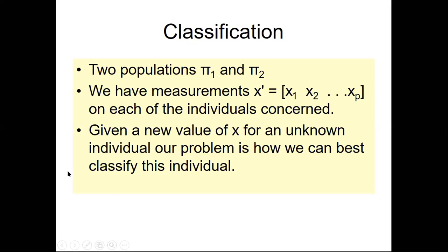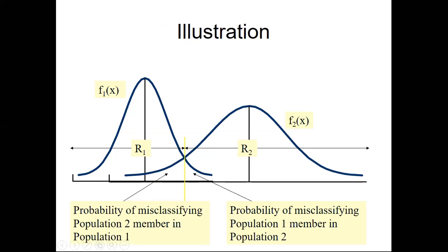You want to classify a new variable for an unknown individual — whether it belongs to pi one or pi two. That classification tells you which population the new unknown vector belongs to. The two populations are shown as normal distributions: one is slightly more peaked and the other is slightly flatter, but for both, the mean equals the median equals the mode.